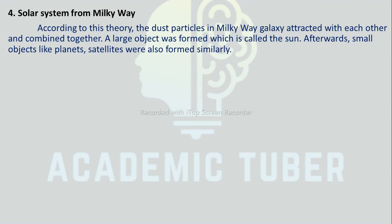According to another hypothesis, the solar system originated from the Milky Way Galaxy. The Sun was formed due to the attraction and collection of dust particles from the Milky Way Galaxy. In the same way, other planets and satellites were formed from the dust and started to revolve around the Sun in their elliptical orbits.